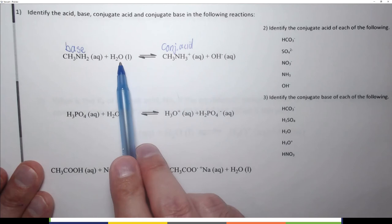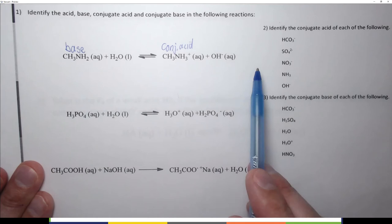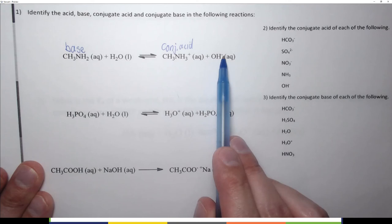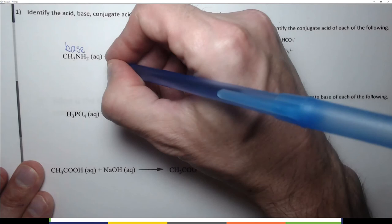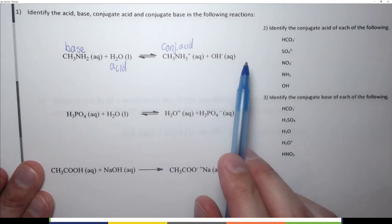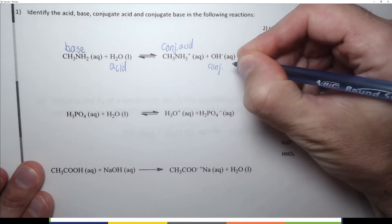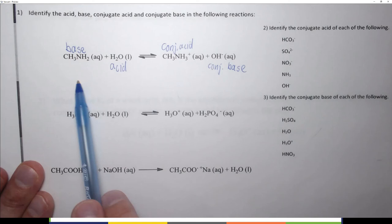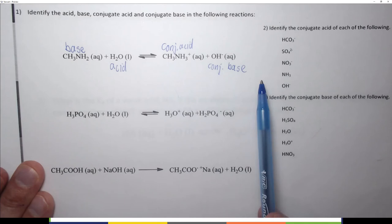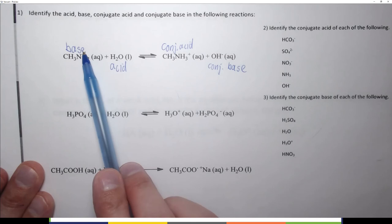Water gave a proton to methylamine, leaving OH⁻ — one less H and a negative charge. Water acted as an acid here, a proton donor. OH⁻ doesn't want to lose another proton; it is the conjugate base of water. Always on the reactant side: one acid, one base. Always on the product side: one conjugate acid, one conjugate base. The acid forms the conjugate base; the base forms the conjugate acid.